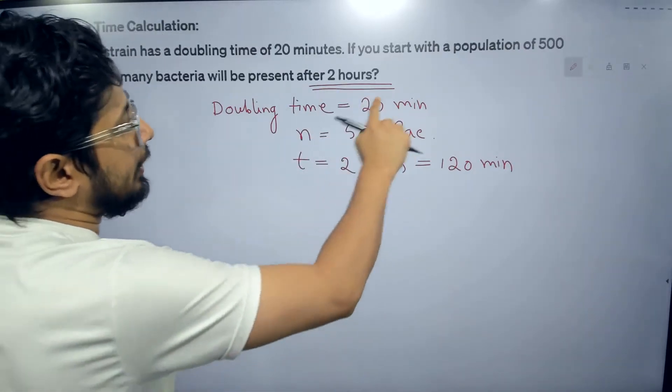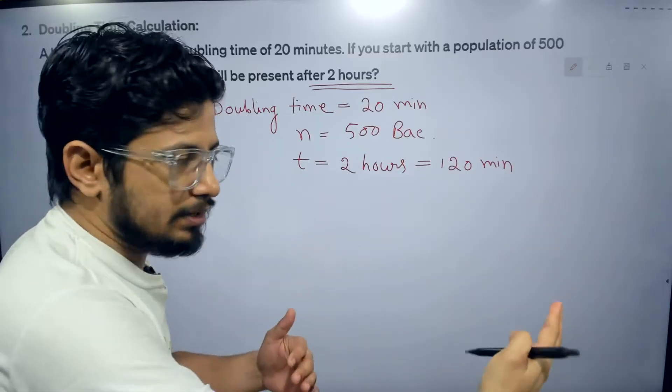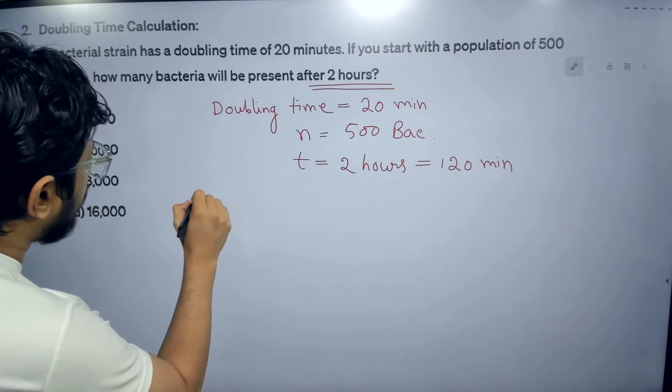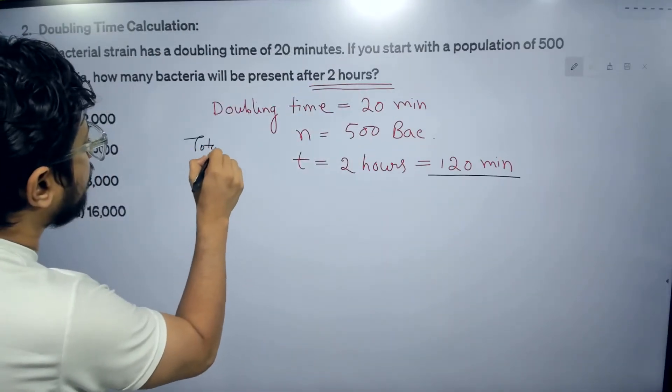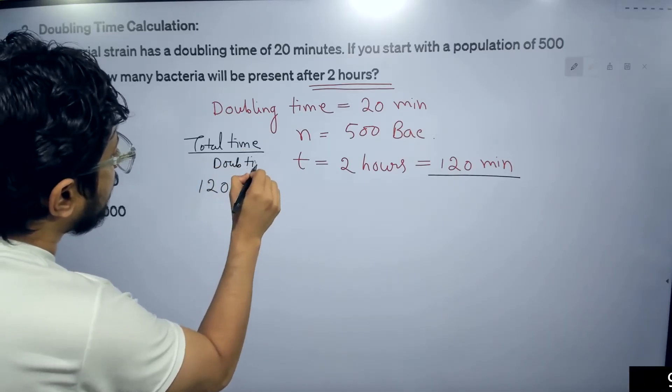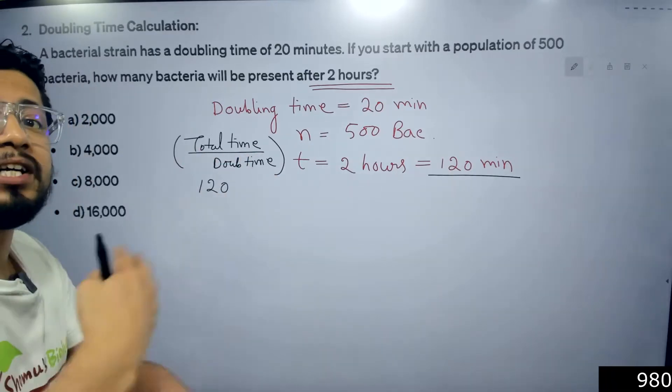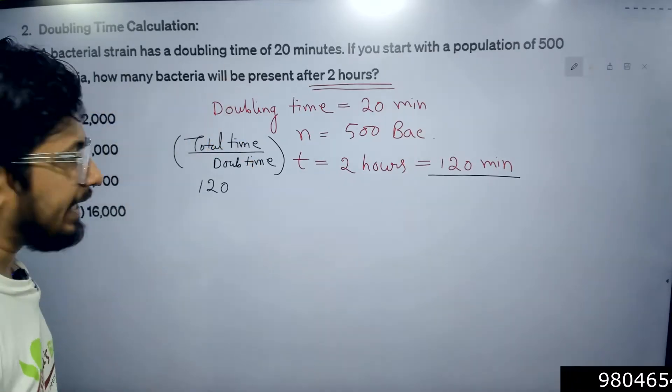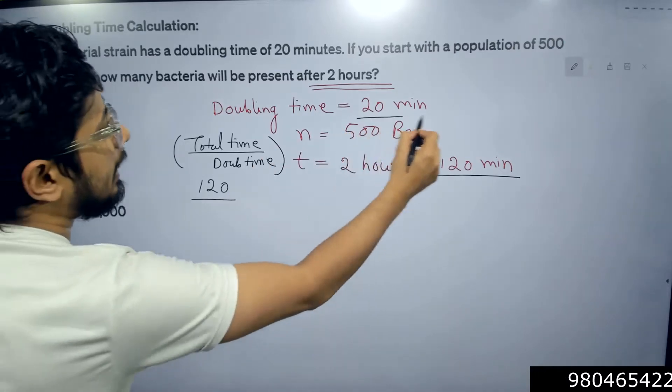Remember one thing, that the bacteria is doubling every 20 minutes. So how many times the bacteria will get doubled? The bacteria will get doubled 120... the total time is 120. What we do? The total time divided by the doubling time. The total time is 120 minutes, how many times the bacteria gets divided? The total time divided by the doubling time. The total time was 120 minutes, the doubling time is 20 minutes.